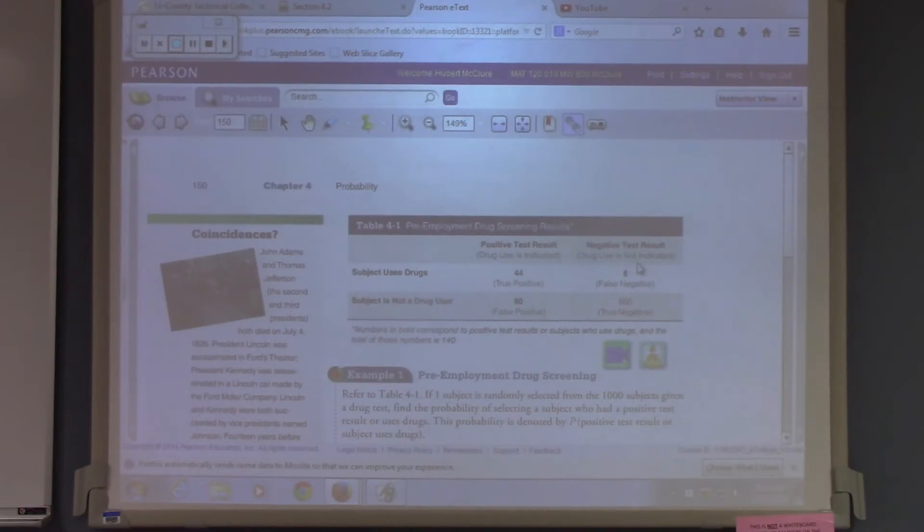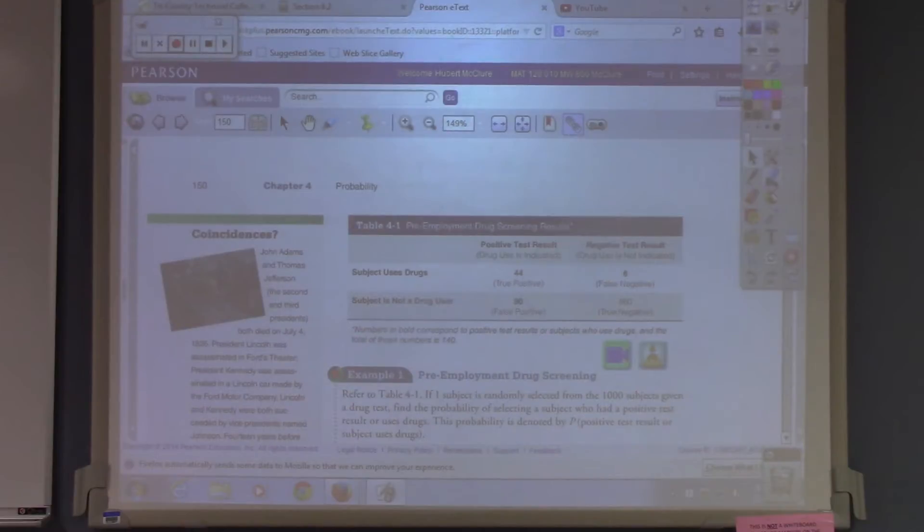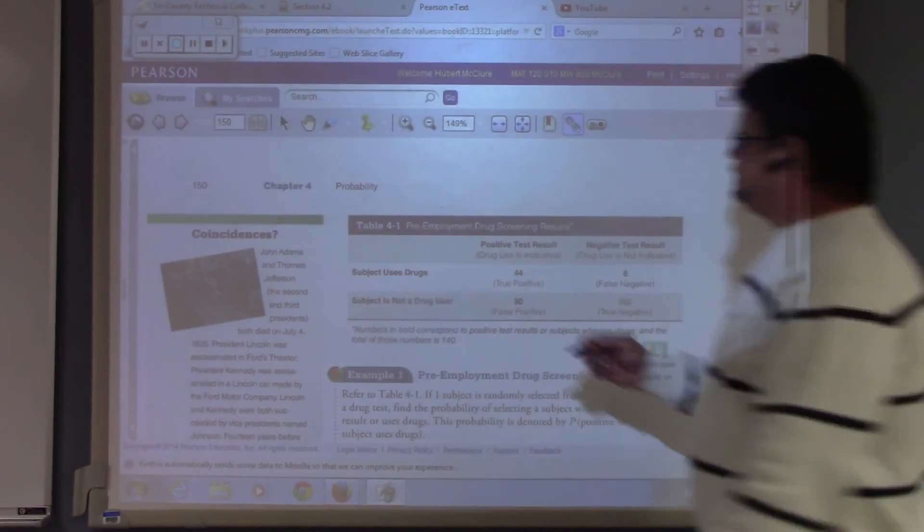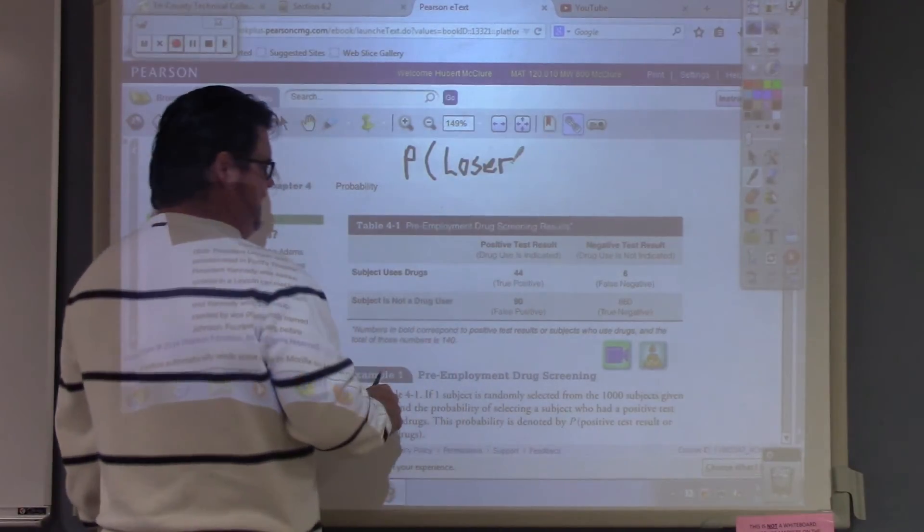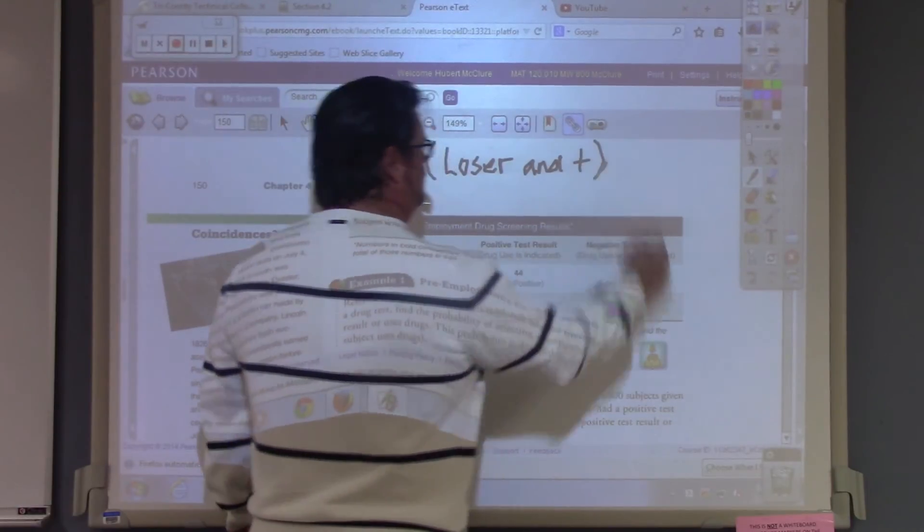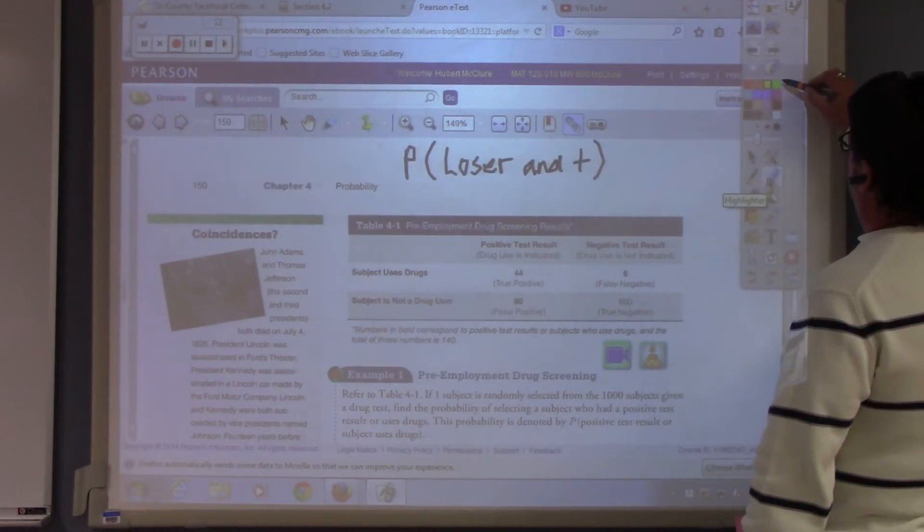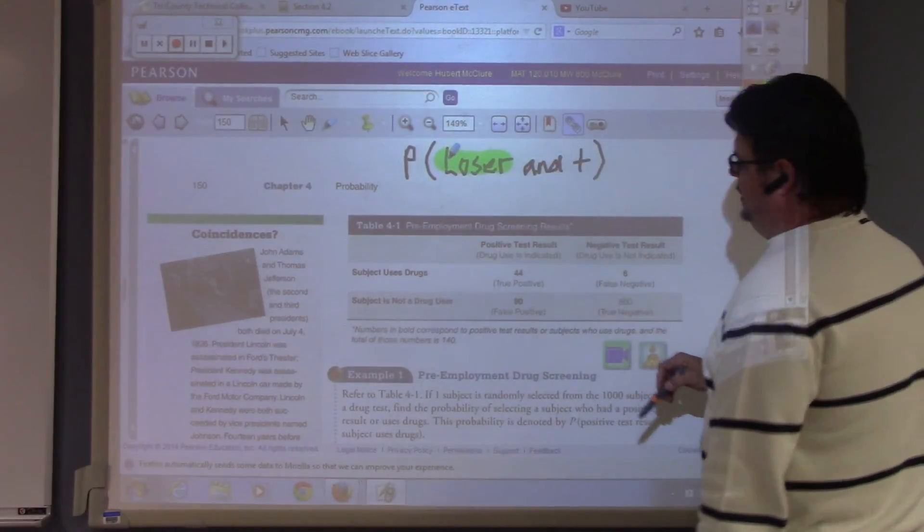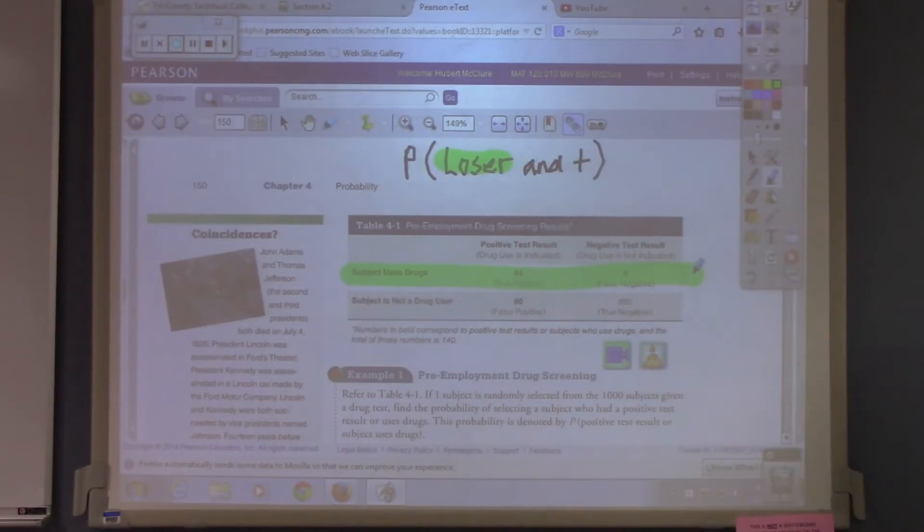What do you do? Take my handy-dandy highlighter. I want probability of uses drugs and tested positive. Okay? So, what do you do? You take your handy-dandy highlighter, and I'm going to highlight the losers. I'm going to highlight them right there. Everybody with me?